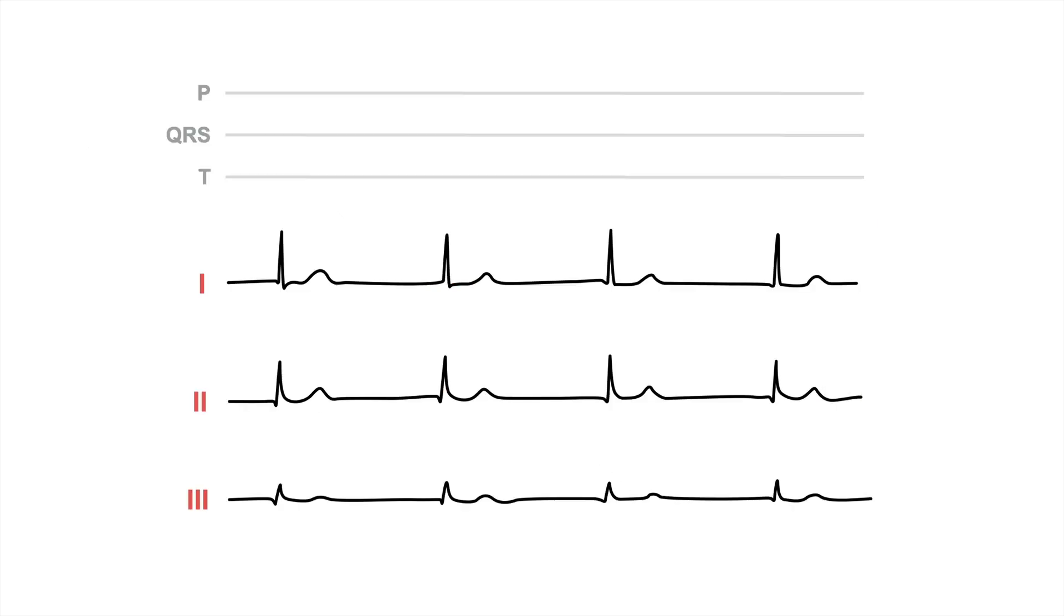Now let's check out this case. Where are the P waves here? Try to identify the QRS complexes and then the T waves first. So here's a QRS complex followed by a T wave, another QRS, T, QRS, T, QRS, T.